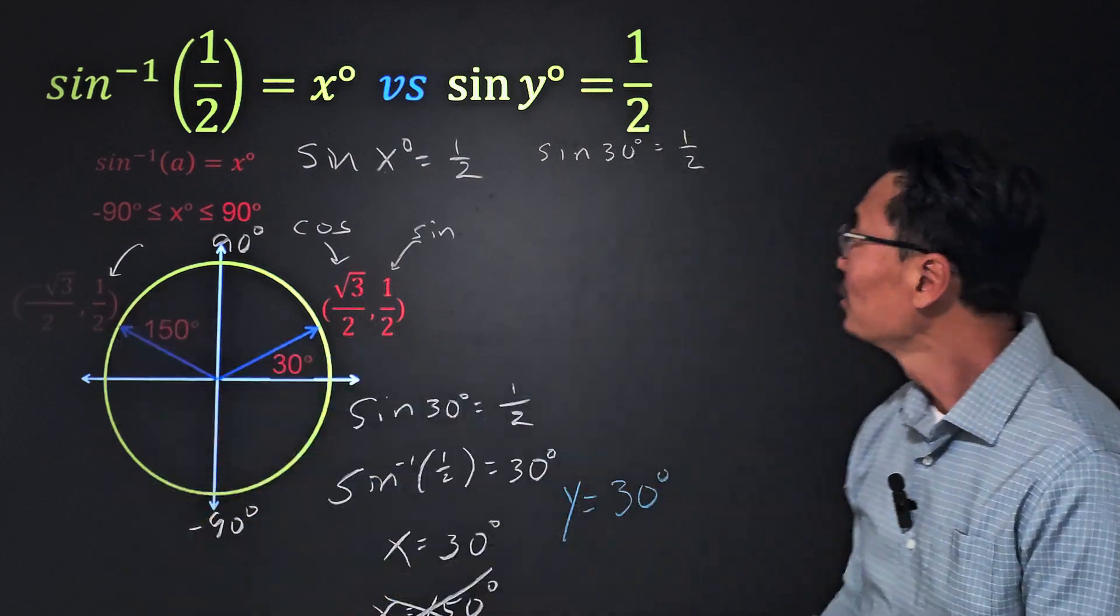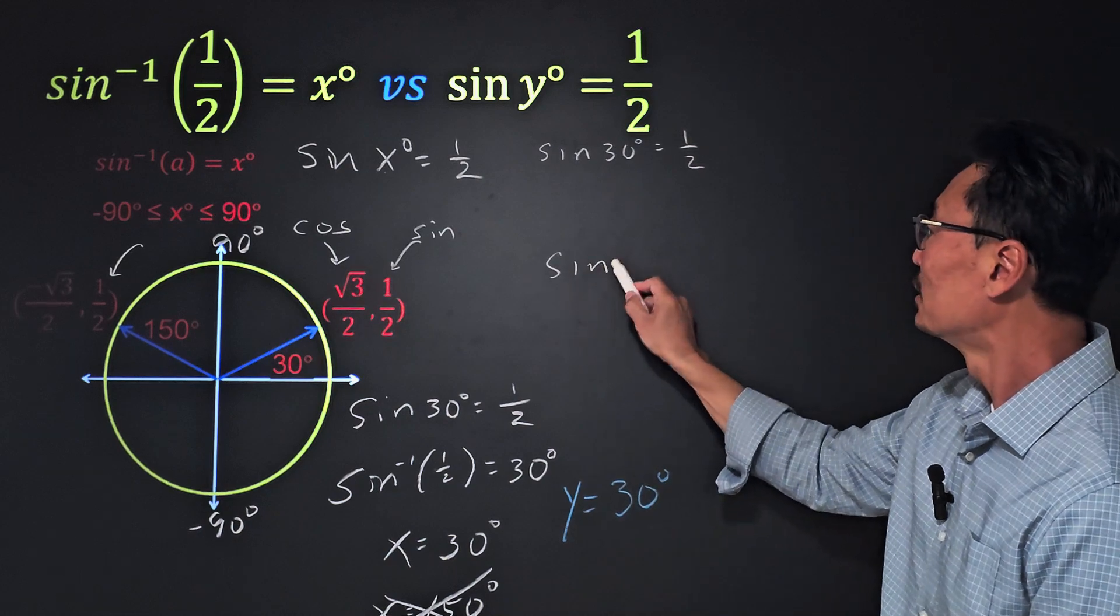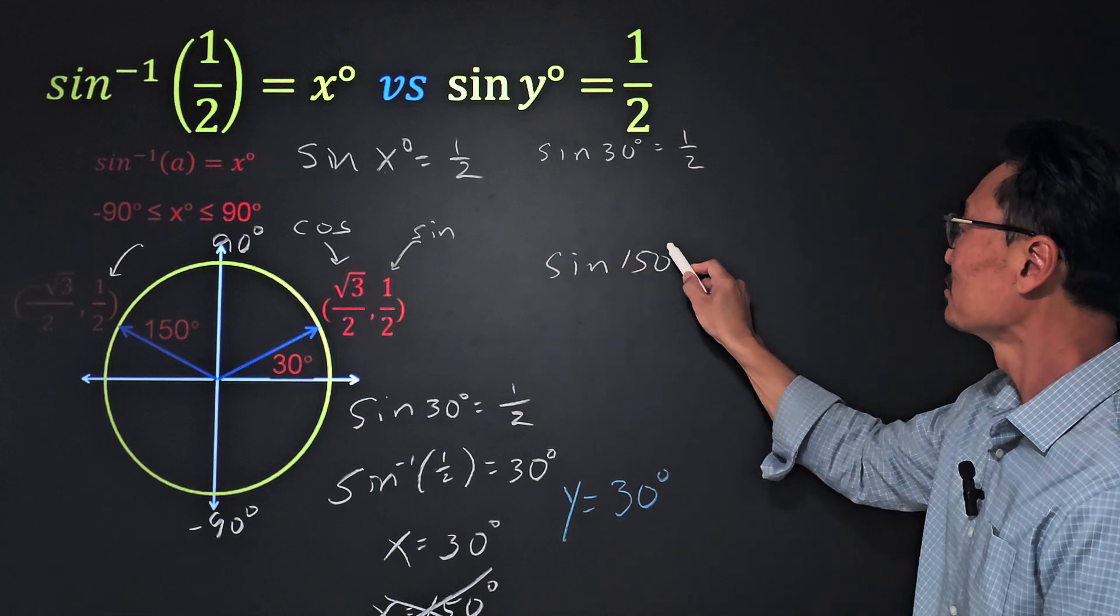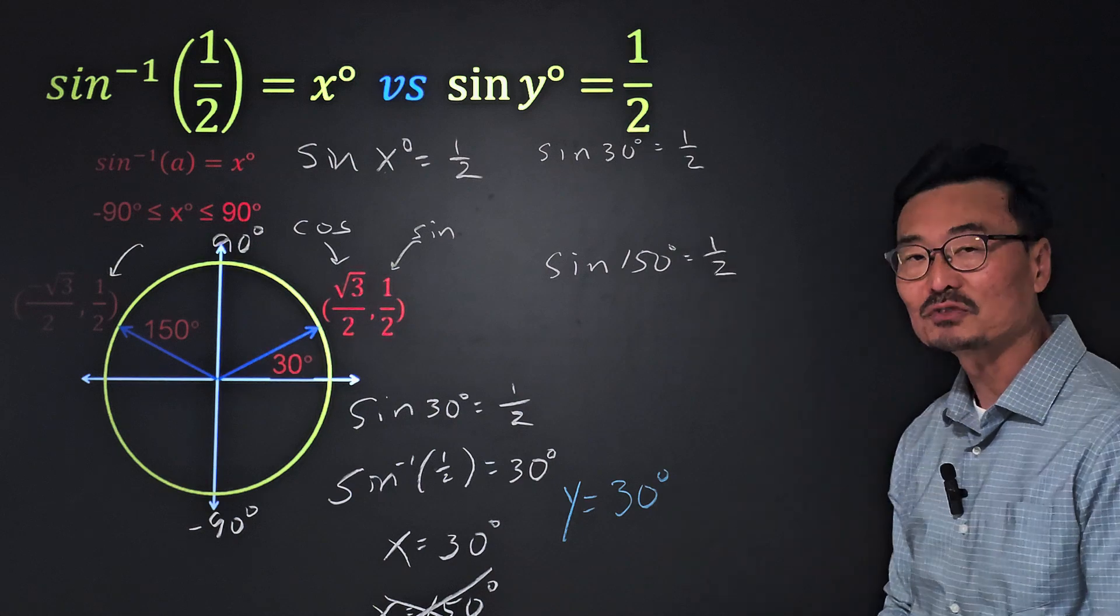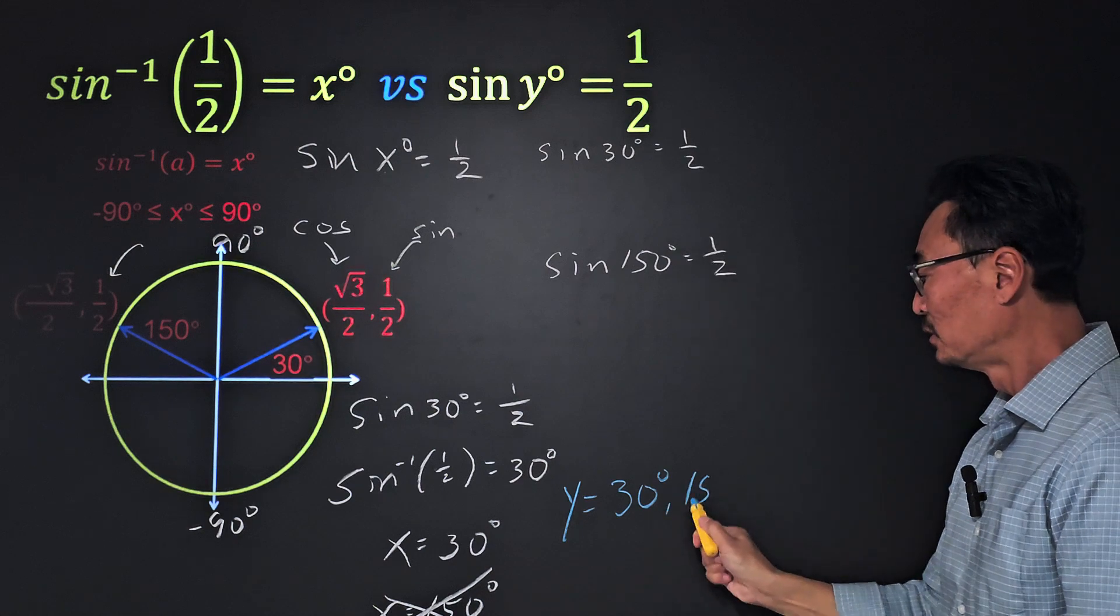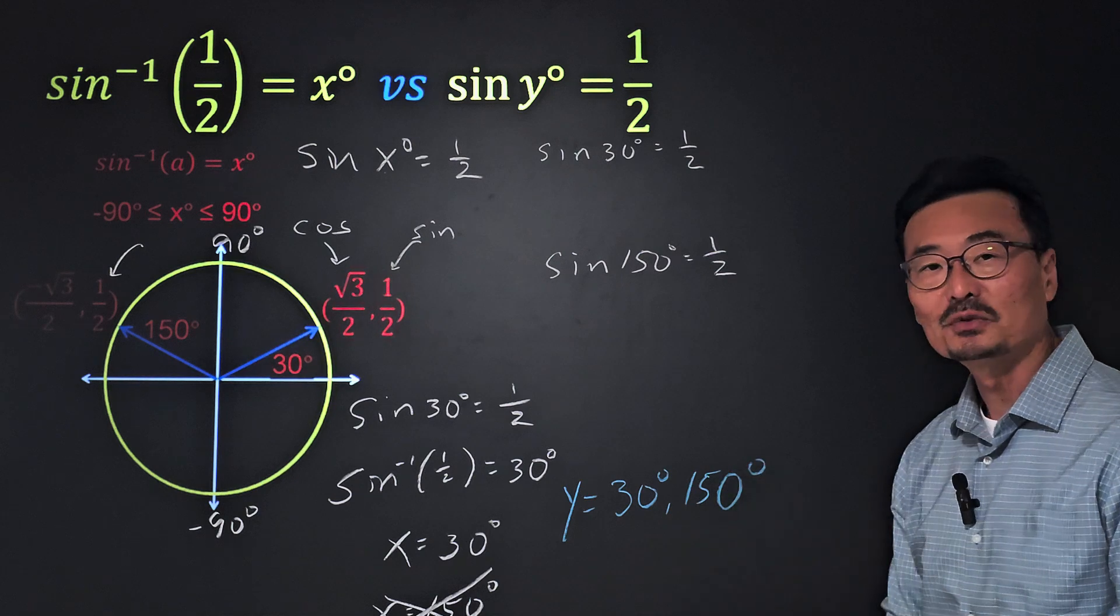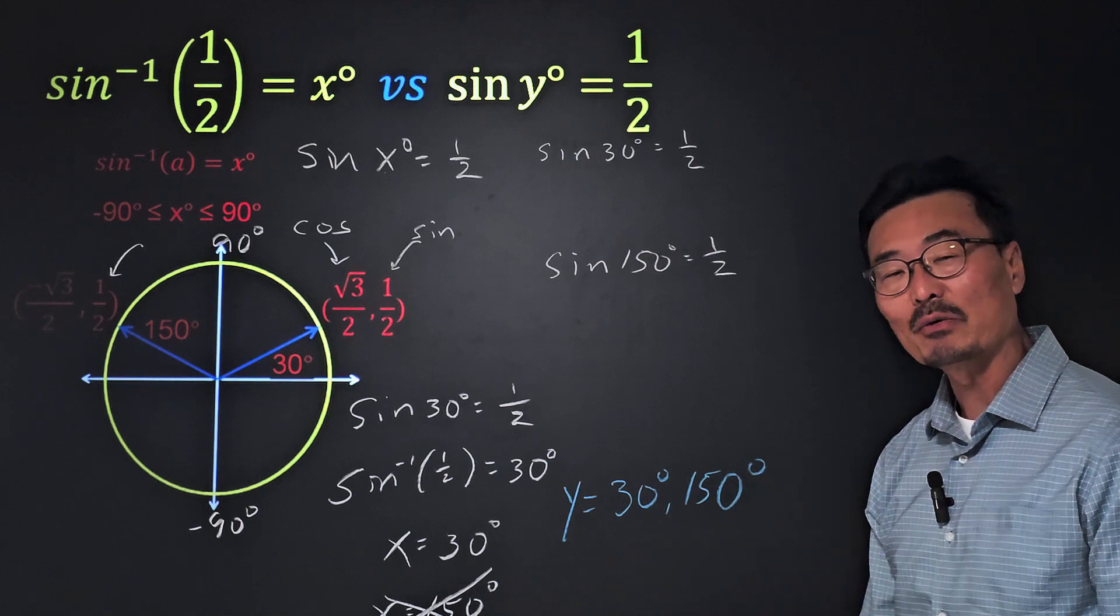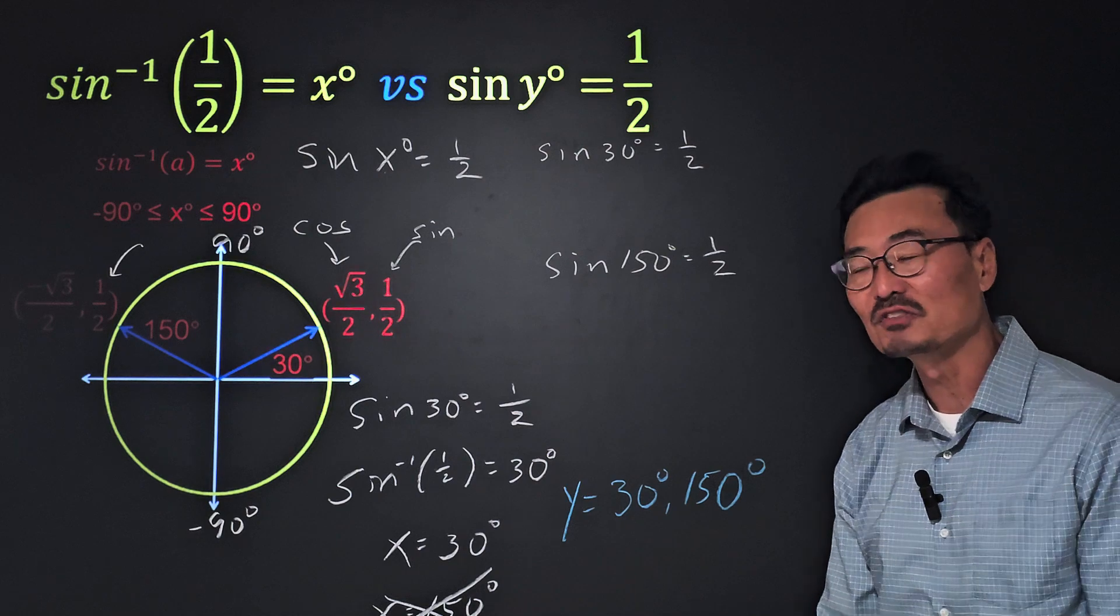However, we can't stop there, because again, sine of 150 degrees equals one-half as well. So we know that sine of 150 degrees equals one-half, so we have to include 150 degrees as part of our solution.